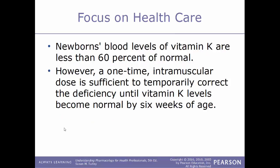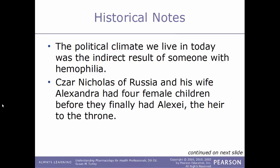Phytonadione is also used to treat bleeding disorders in patients whose livers don't make enough clotting factors 2, 7, 9, or 10. It can also be used to treat patients who have received an overdose of an anticoagulant drug. In newborns, blood levels of vitamin K are less than 60 percent of normal; however, a one-time intramuscular dose is sufficient to temporarily correct the deficiency until vitamin K levels normalize, usually by the time the newborn is six weeks old.